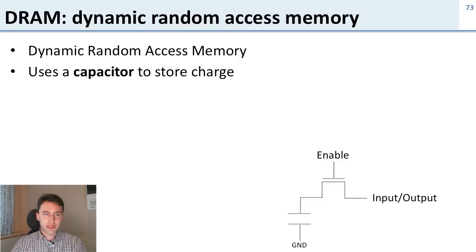DRAM is dynamic random access memory and instead of using a pair of inverters to take a feedback loop to keep the value, it just uses a capacitor. You put a plus charge on the capacitor to store 1 and no charge on the capacitor to store 0.